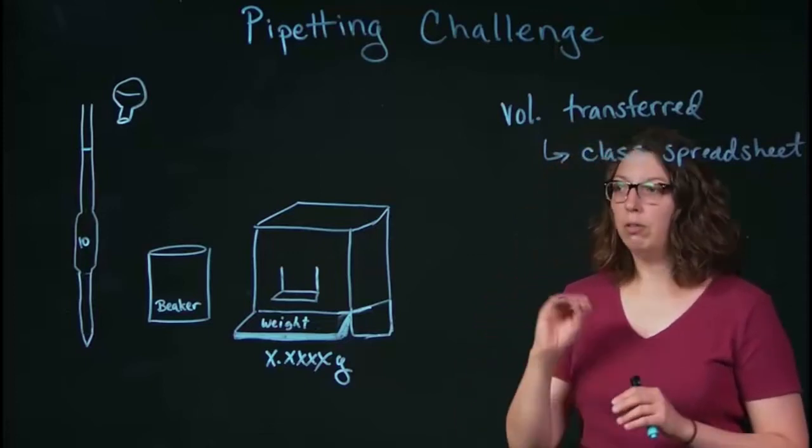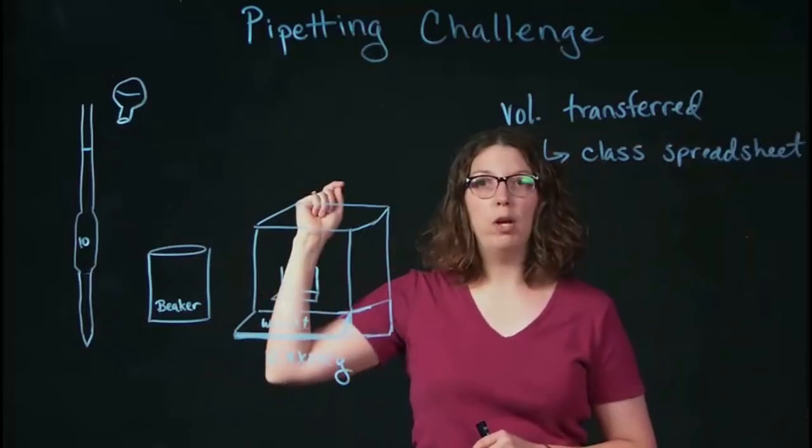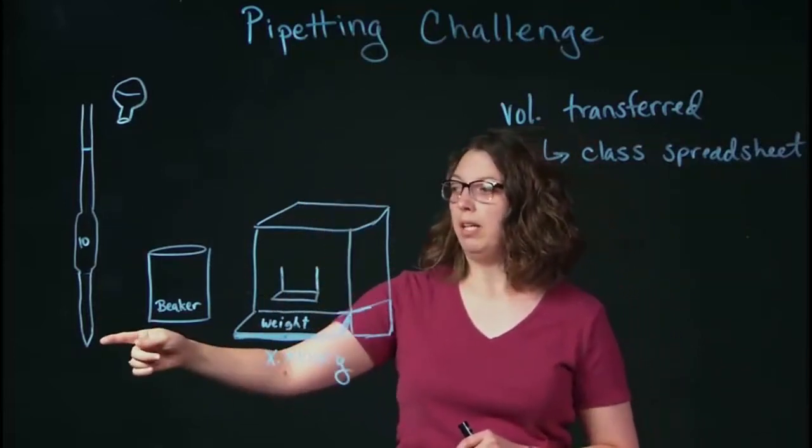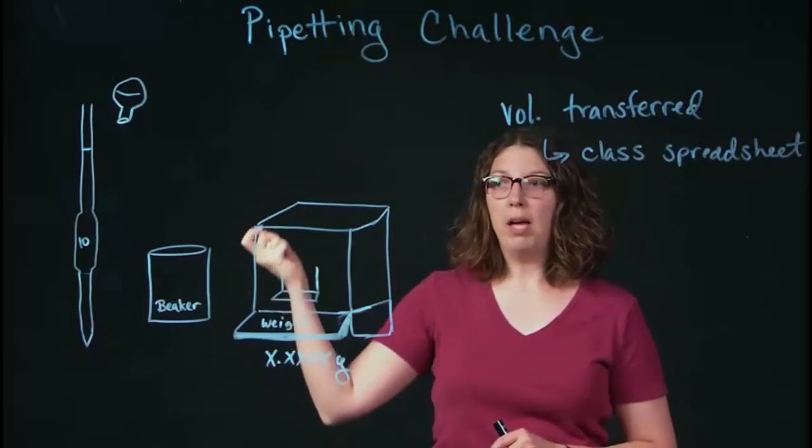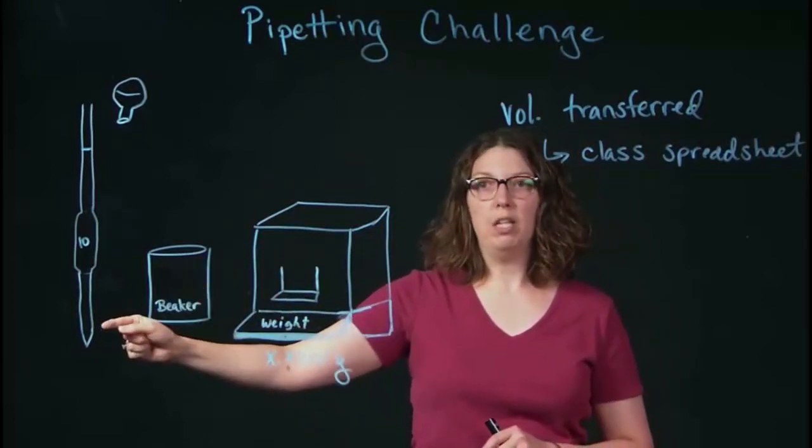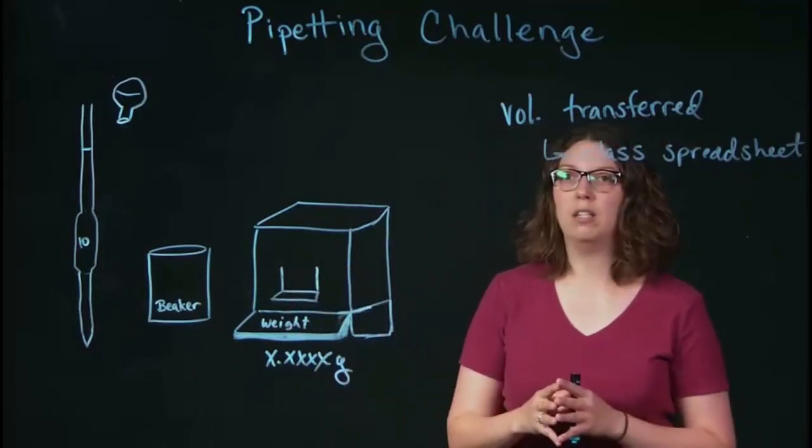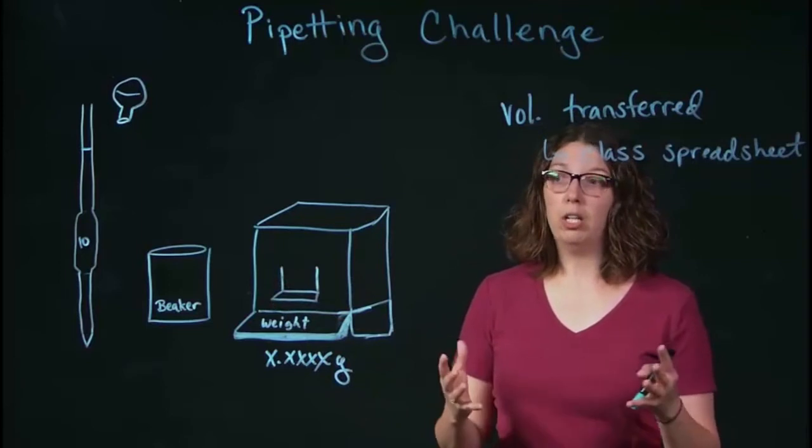And just to sort of list those here, make sure you fill to the line, make sure you have no air bubbles when you fill to the line at the end of the tip. And when you pipette and transfer into the beaker, there should be a little bit of water left at the tip of the pipette that stays there. So those are three things that will help you become really good at pipetting.